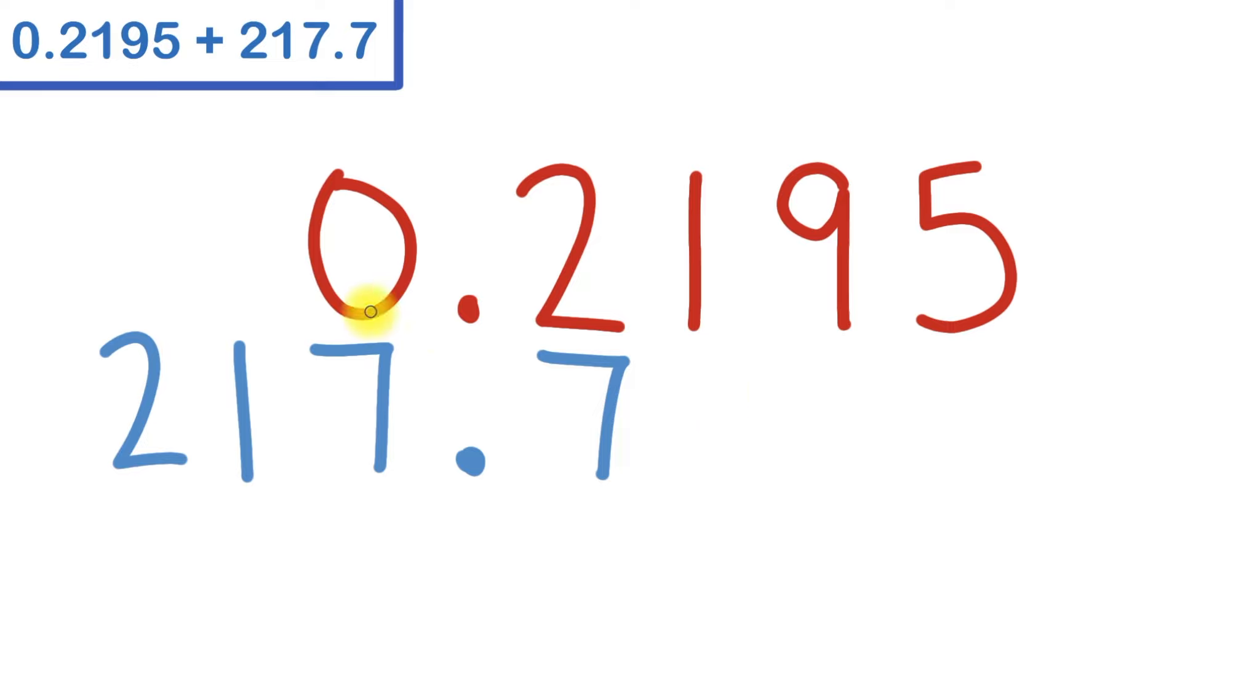And finally, if we have any empty place values, we should fill those with zeros. I'll write a zero here, here, here, here, here, and here.